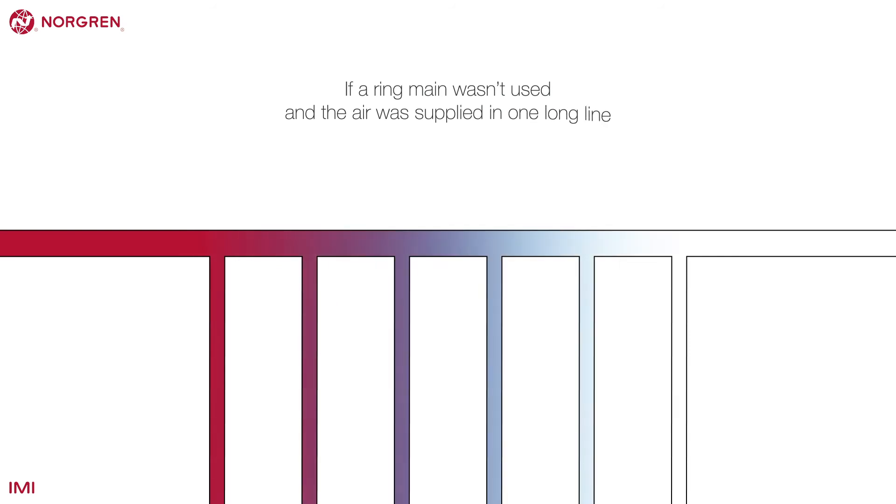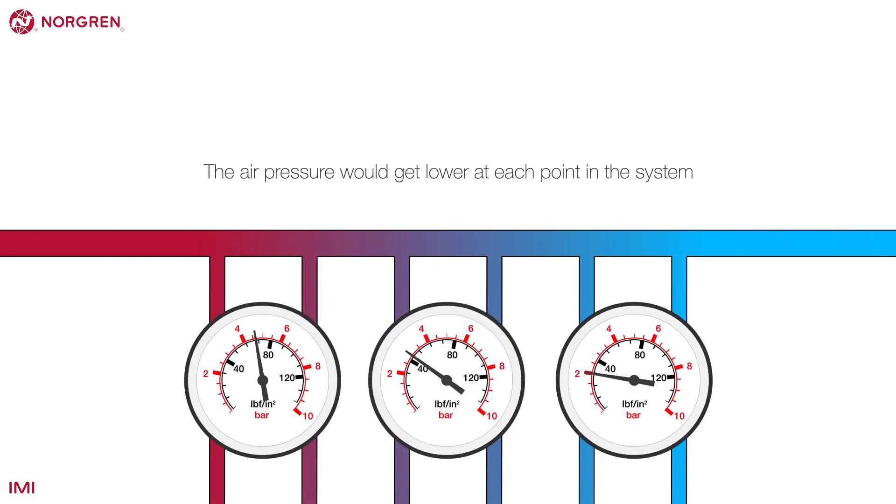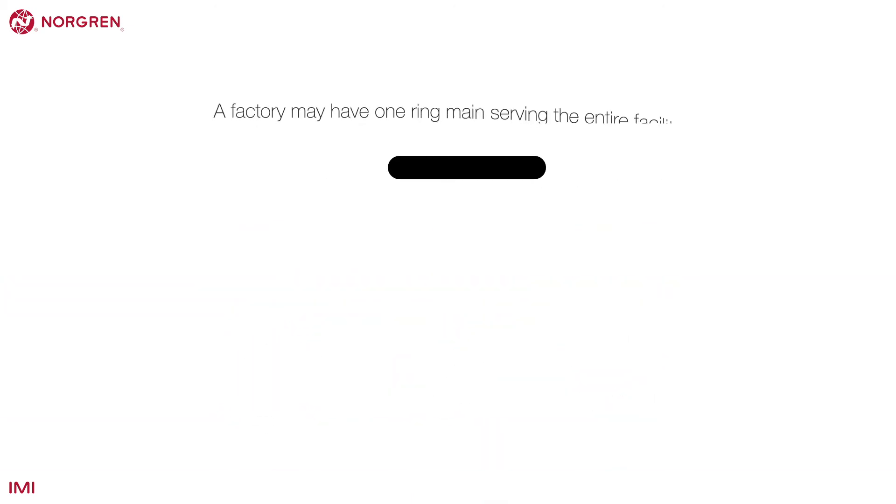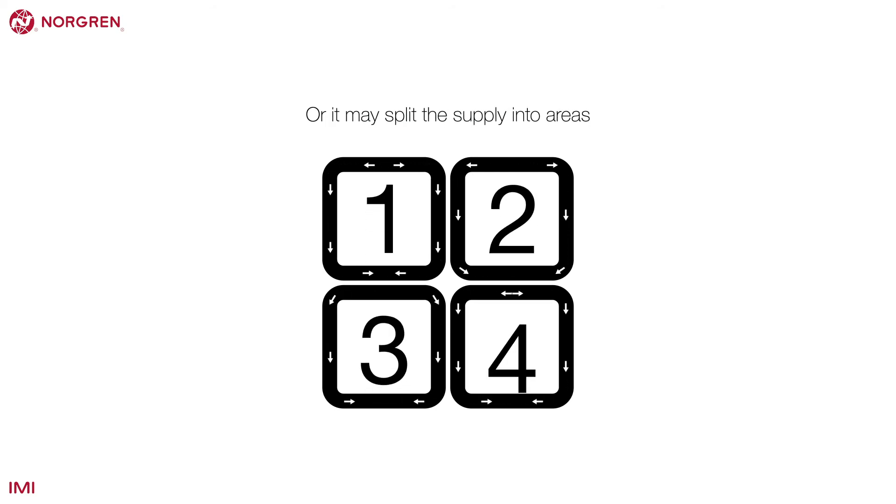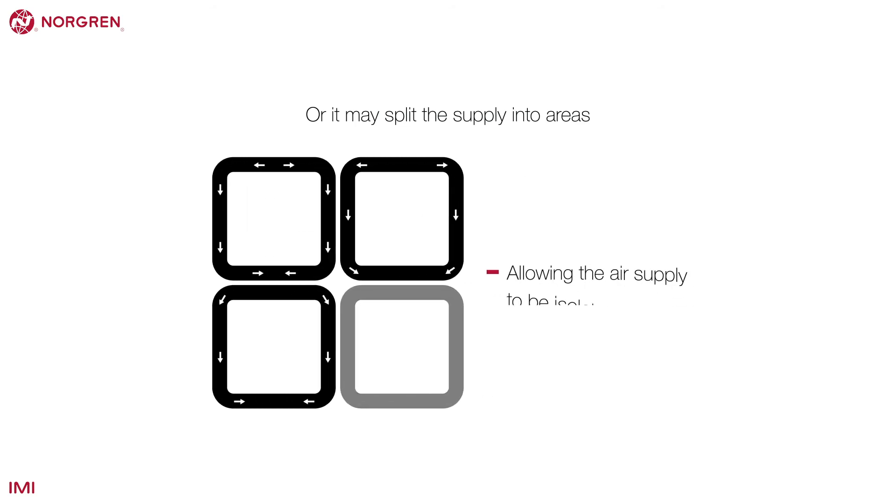If a ring main wasn't used and the air was supplied in one long line, the air pressure would get lower at each point in the system. A factory may have one ring main serving the entire facility or it may split the supply into areas or zones. Each zone would have its own ring main, allowing the air supply to be isolated when not needed.